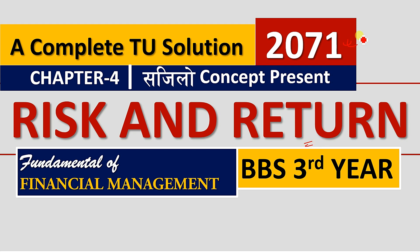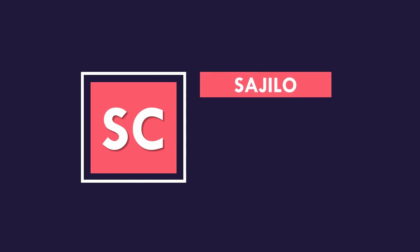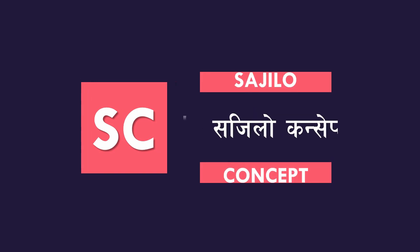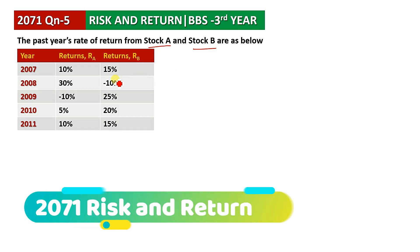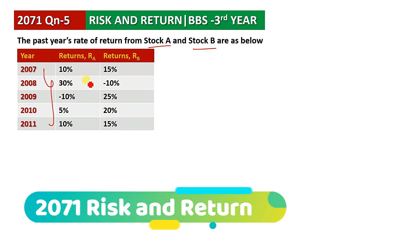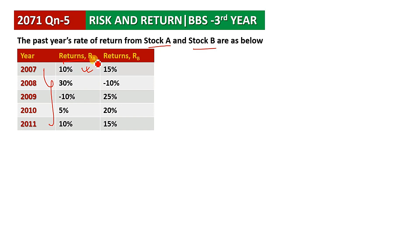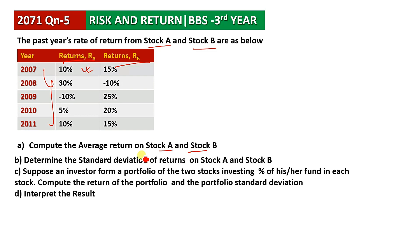In 1971, we have a question about Stock A and Stock B. The historical analysis uses data from 2007. The data will be taken and this is the return. We have the return of Stock A and Stock B, the standard deviation of Stock A and Stock B. The question must be answered as part of a portfolio, so the return and standard deviation will be calculated.